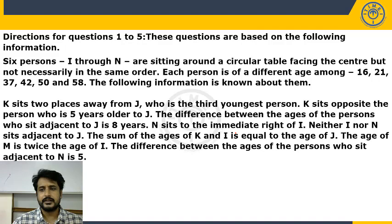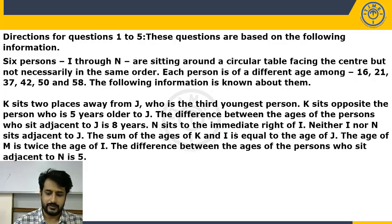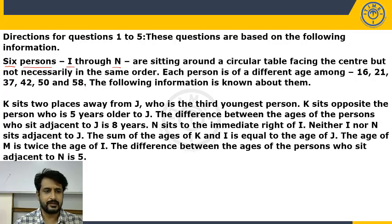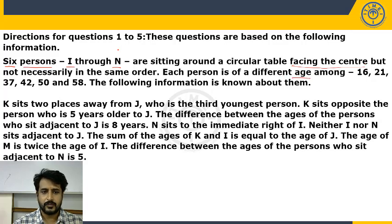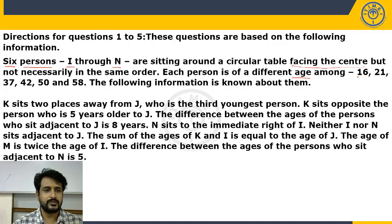Six persons I through N are sitting around a circular table facing the center, but not necessarily in the same order. We have a total of six persons. In prelims exams, they won't give more than around 5, 6, or 7 persons when they provide extra variables — not 8, 9, or 10. And each person is of a different age, so here is the extra variable. We have to place them in a circle and also identify the ages of each person. Their ages are 16, 21, 37, 40, 50, and 58.